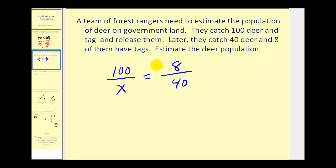Now we can cross-multiply. 8 times x must equal 100 times 40. That would be 4,000. Dividing both sides by 8, we have x equals, well 4,000 divided by 8 would be 500. So using this tagging technique, the rangers would estimate there are a total of 500 deer on the government land.